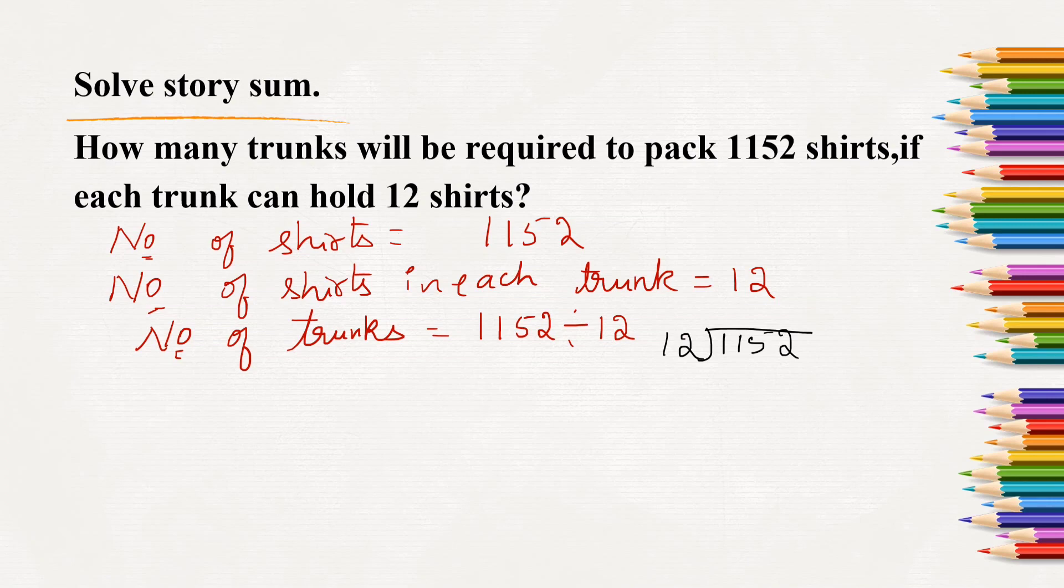12 times 1 if we do also, it will be more than 11. So, we will have to consider 3 digits here. So, 12 times 9 will be 108. So, from 15, we cannot take away 8. So, we will have to borrow and make it 15. 15 minus 8 is 7.